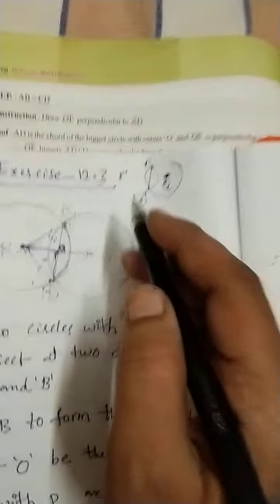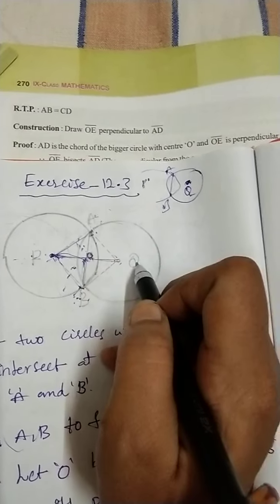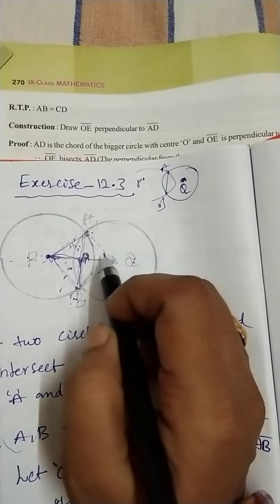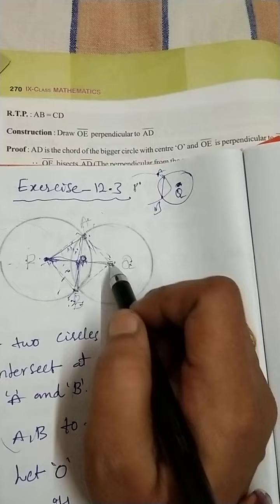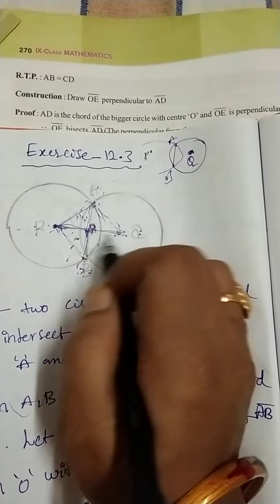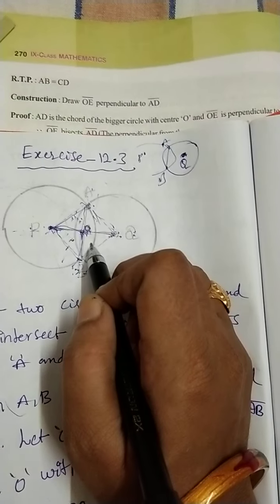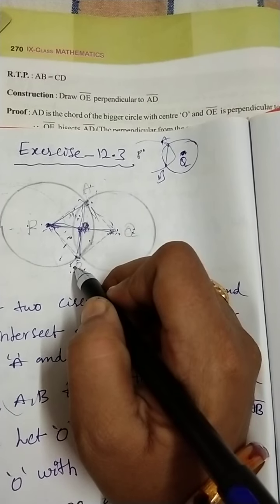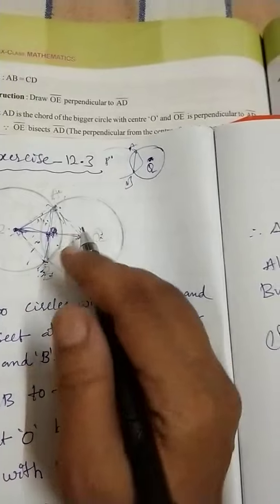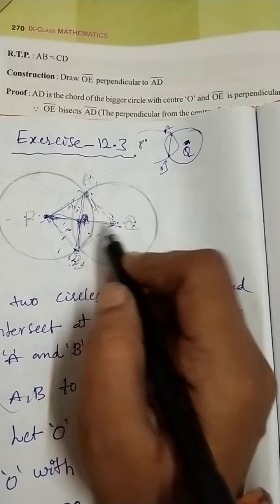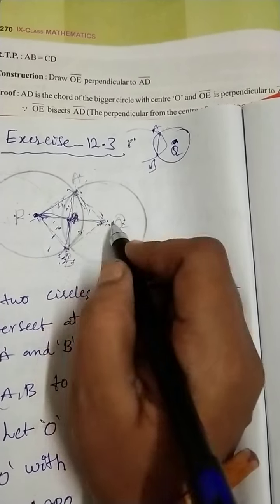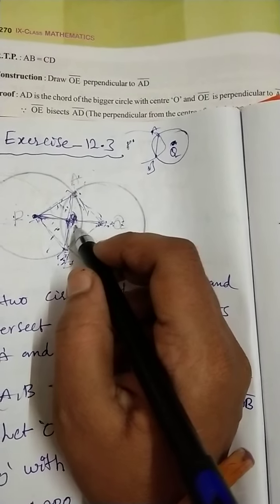Similarly, for the right side, in triangles AOQ and BOQ, we apply the same process: AQ is equal to BQ, because they are radii of the circle with center Q. OQ is equal to OQ, because that is the common side of both triangles. And AO is equal to BO, because O is the midpoint of AB. Based on the same SSS congruency, triangle AOQ and triangle BOQ are congruent triangles. Therefore, angle AOQ equals angle BOQ by the CPCT rule.